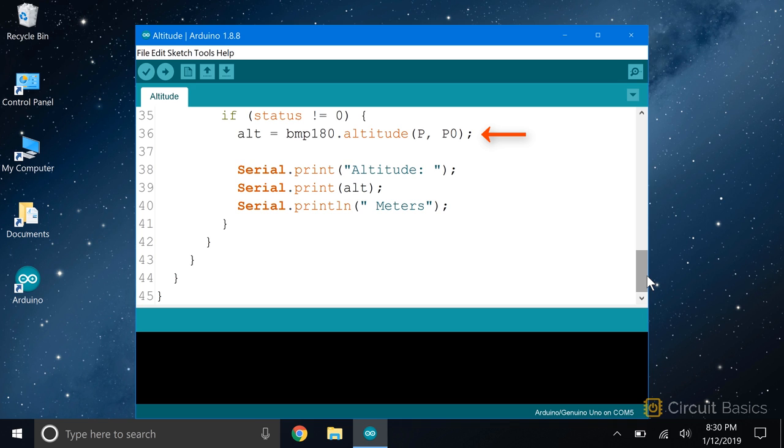The altitude function takes these parameters and runs them through the international barometric formula we saw earlier to get a value for the altitude in meters. The result of that calculation is stored in the ALT variable. Now all we have to do is print out the results. First we serial print the word altitude, then we print the ALT variable, and finally we print the word meters and end the line.